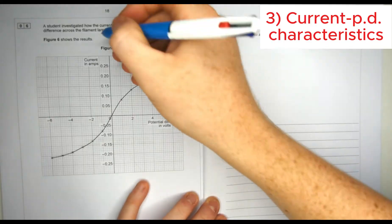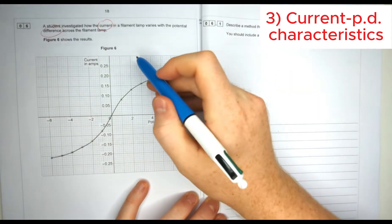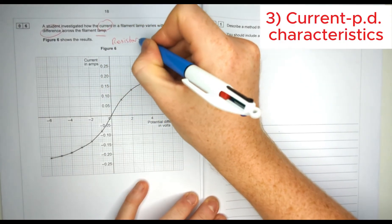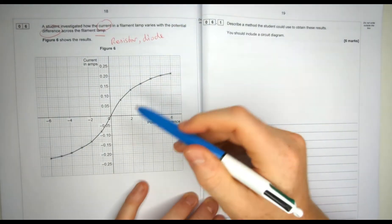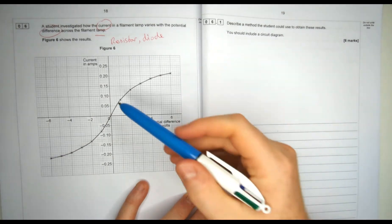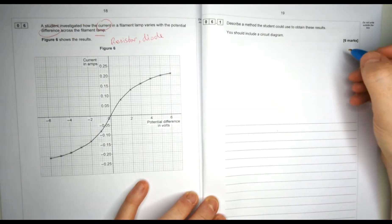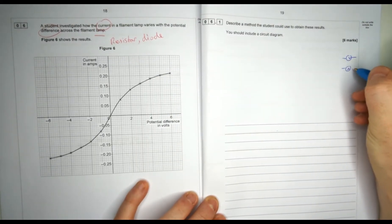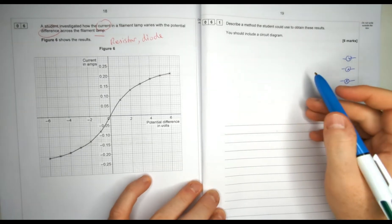This question asks about how the current in a filament lamp varies with potential difference. You could also be asked about a fixed resistor or a diode. The graph provided should jog your memory about what practical this is. The key clue is that we've got current and potential difference, so in our circuit diagram we need to draw a voltmeter and an ammeter, and obviously a lamp symbol.